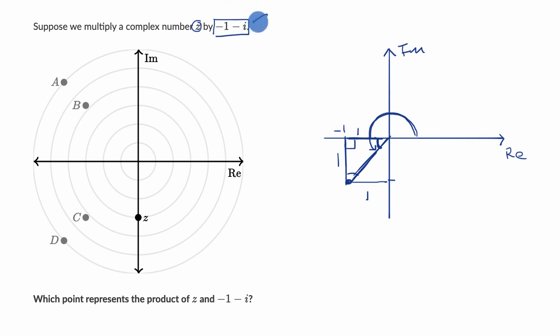So the argument here is going to be equal to 225 degrees. So when you multiply by this, you rotate by 225 degrees. Let's see, this is rotating by 180 degrees and then another 45. So if you just rotated by that, you would end up right over here.